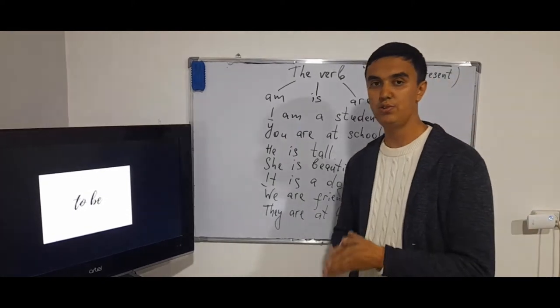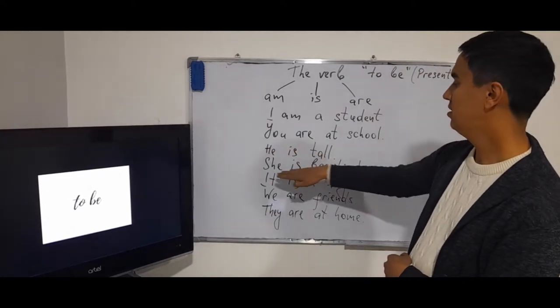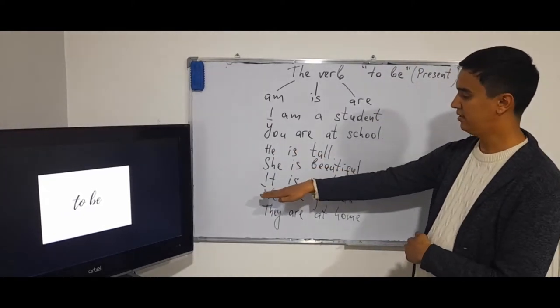Is is used in third person singular. Example: he is tall, she is beautiful, and it is a dog.